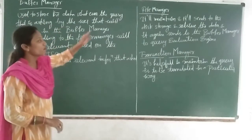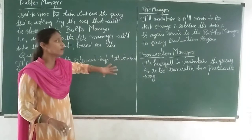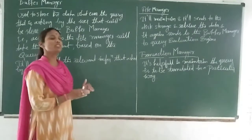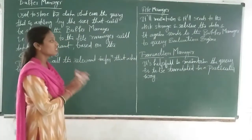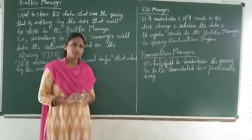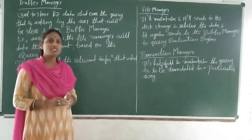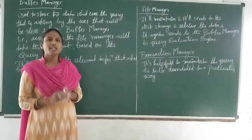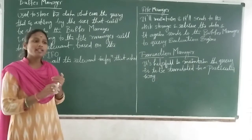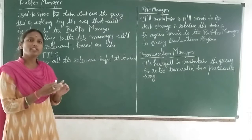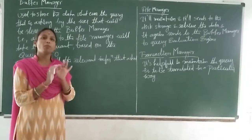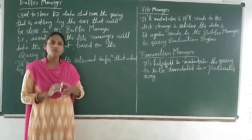Here, Worker Manager, File Manager, and Transaction Manager — these three are mainly used to store the data. Whatever the user sends, that information is stored with the help of these three types. We have discussed in the previous lecture the database structure, where users and application programs interact together, and you can store data in the database system with the help of DBMS software.